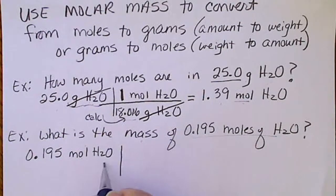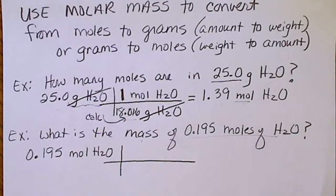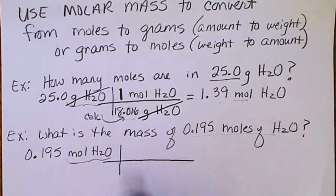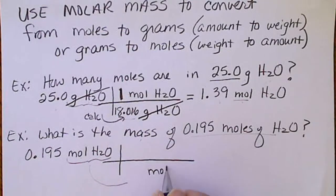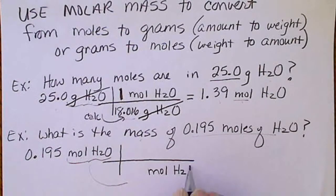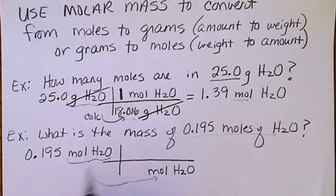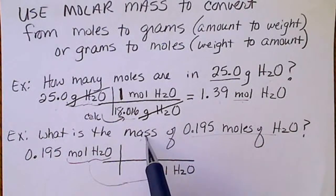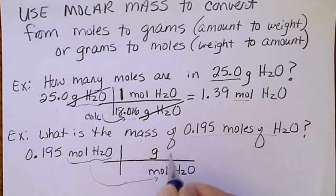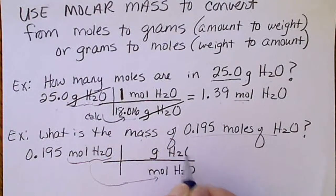We do one of these—we do the science of canceling units—and now moles of water goes down here in the denominator. So we put mole here, and since the problem tells us to calculate the mass, we're going to put grams of water in the numerator.